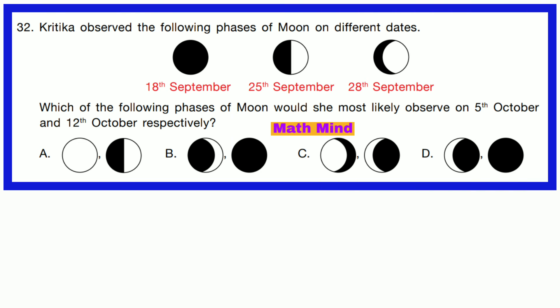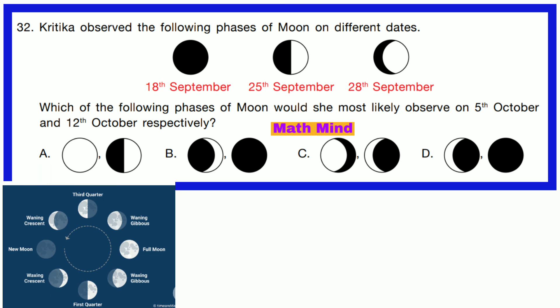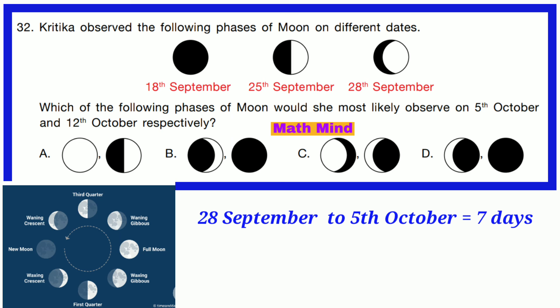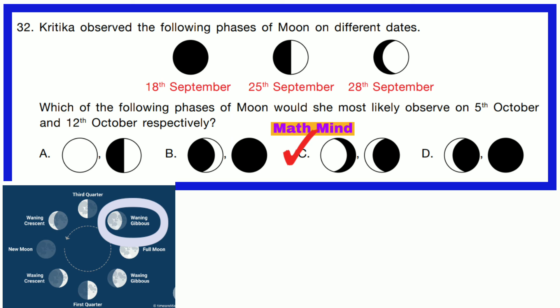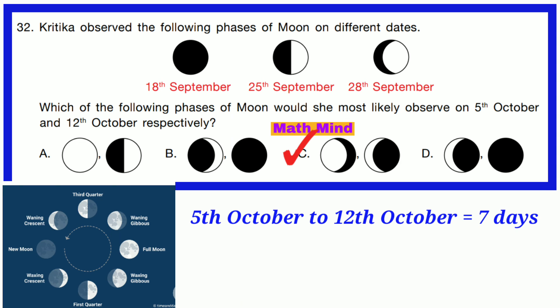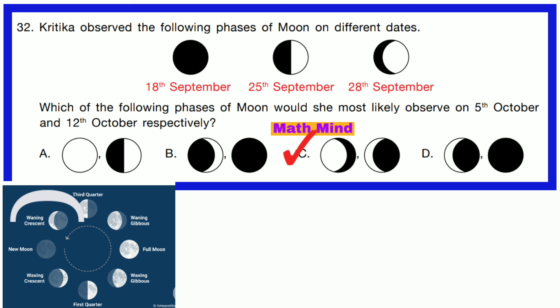Question number 32. Krittika observed the following phases of moon on different dates. 18th September: no moon. 25th September: first quarter. 28th September: waxing gibbous. Full moon to first quarter takes seven days. First quarter to waxing gibbous takes three days. The question asks which phases of moon she would most likely observe on 5th October and 12th October respectively. From 28th September to 5th October is seven days. So after seven days, the shape of moon is waning gibbous. From 5th October to 12th October is also seven days. So after seven days from waning gibbous, the shape of moon is waning crescent. Option C is correct.